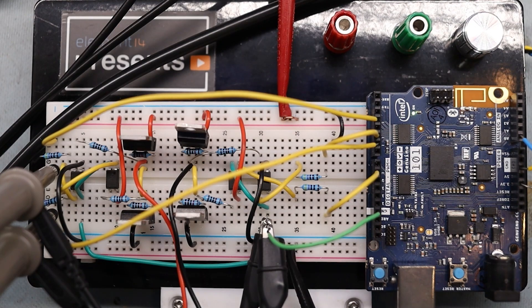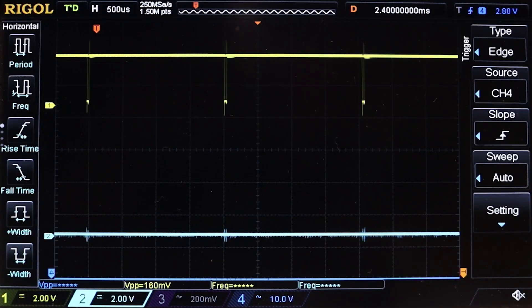In the previous episode, we went over some optoisolator and optocoupler theory. Well, in this application-based episode, we're going to put them to work as the interface between an Arduino PWM signal and an H-bridge.